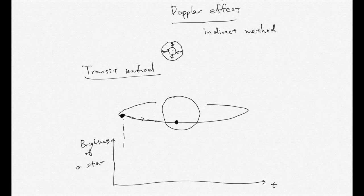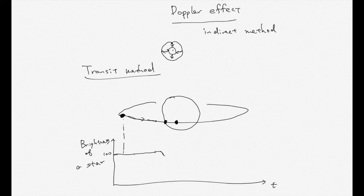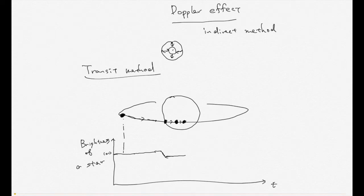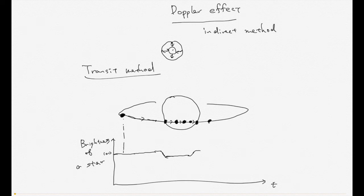If the planet is rotating in this position, brightness of the star is at maximum — almost 100%. When the planet is moving into this region, some of the surface of the star is blocked, and the brightness of the star is going to decrease — it becomes a little bit weaker. When the planet has passed through the surface of the star, the brightness returns to the original 100%.